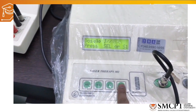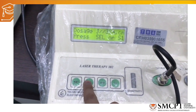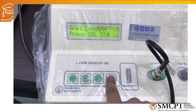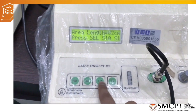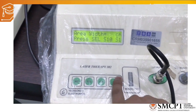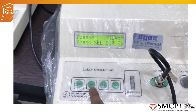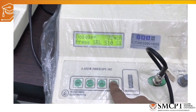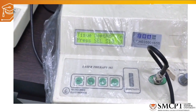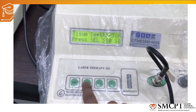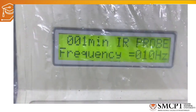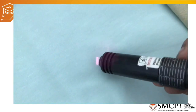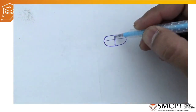The machine asks for intensity type — we select joules per centimeter square. We then enter the tissue length of 2 centimeters and width of 1 centimeter. For the dose, we enter 1.5 joules per centimeter square for wound healing, and a tissue depth of 1 centimeter. The machine automatically calculates the treatment time — in this case, 1 minute — using the pulse frequency selected.